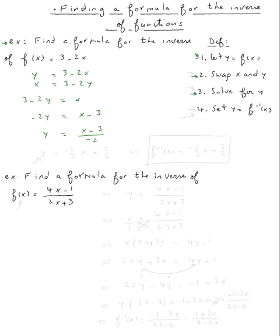If you don't like negative 2 in the bottom, you can rewrite this. It's negative 1 over 2x minus 3 over negative 2 is plus 3 over 2.